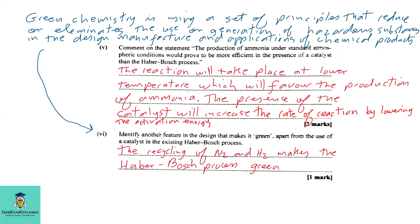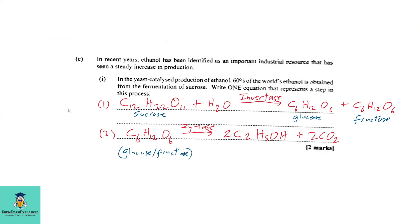Part 6: Identify another feature in the design that makes it green, apart from the use of a catalyst in the existing Haber-Bosch process. So before we look at how to make it green, let's discuss the definition of green chemistry. Green chemistry is using a set of principles that reduce or eliminate the use or generation of hazardous substances in the design, manufacture and applications of chemical products. So in this case, how can we make it efficient by not wasting our chemicals or the reactants? So the way to make it green is by recycling the N2 and H2. So the recycling of the N2 and H2 is what makes the Haber-Bosch process green.